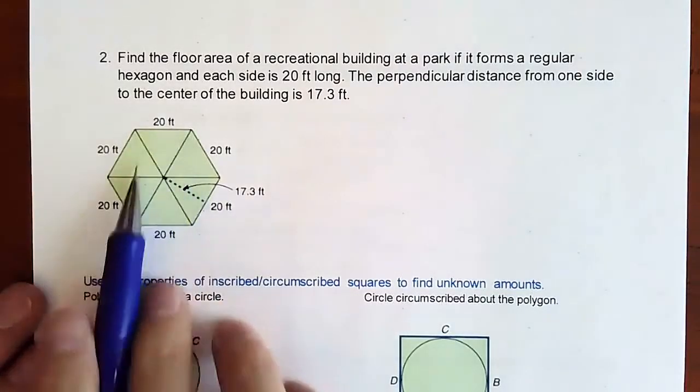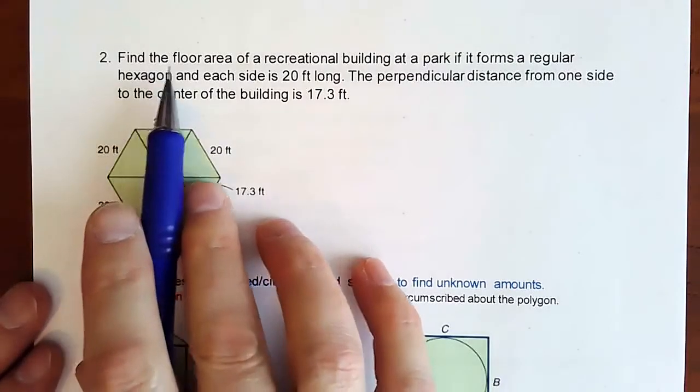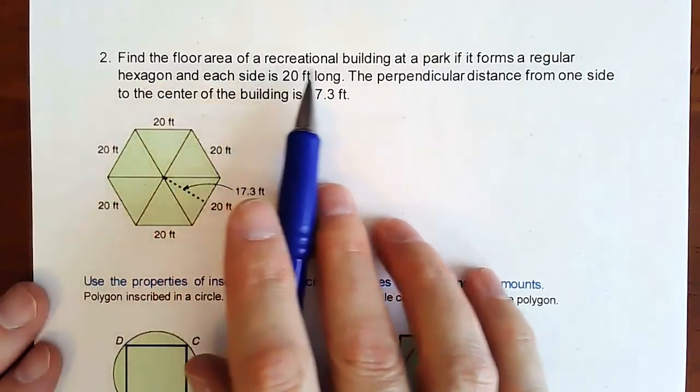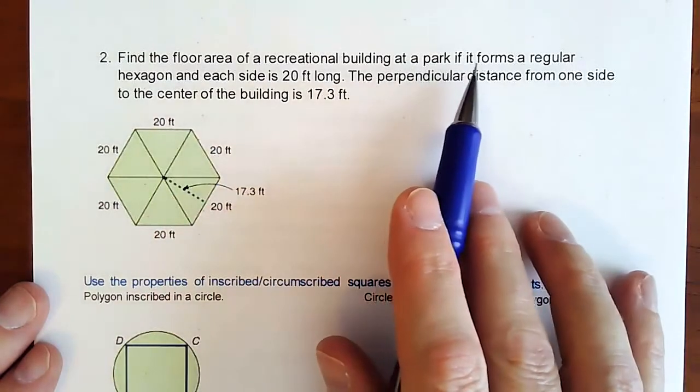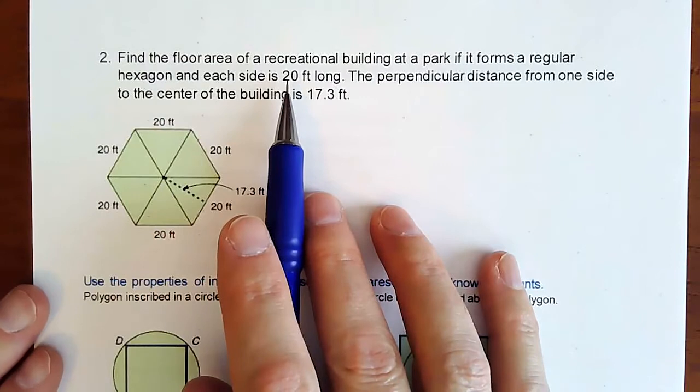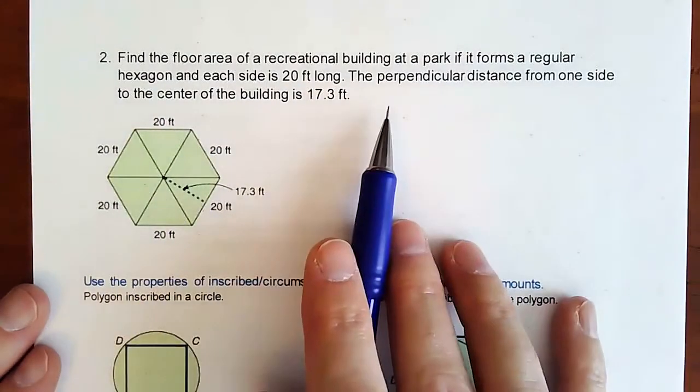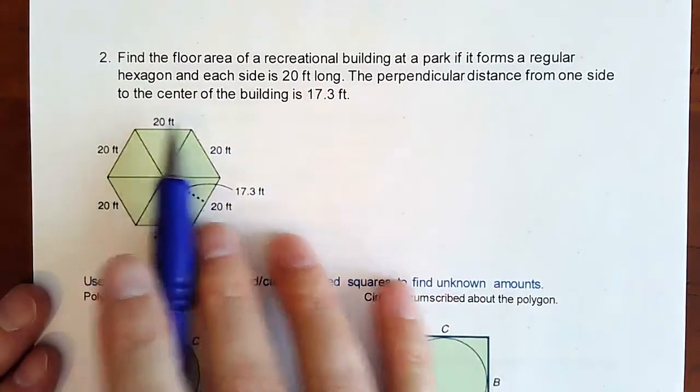In this video we are going to find the area of this hexagon. Find the floor area of a recreational building at a park if it forms a regular hexagon and each side is 20 feet. The perpendicular distance from one side to the center is 17.3.